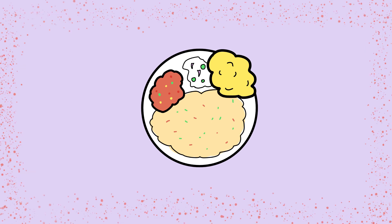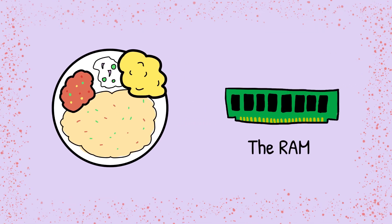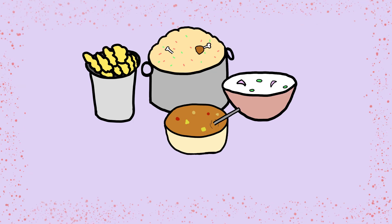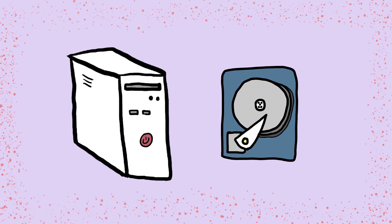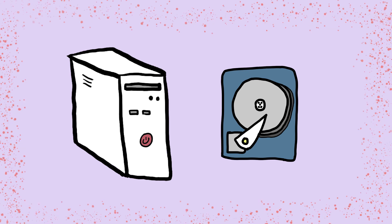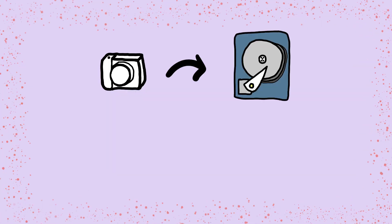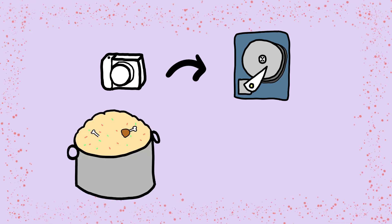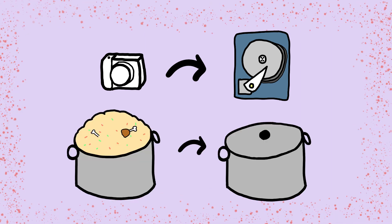The plate that you eat from is analogous to the working memory, aka the primary memory or the RAM. The pots containing food are akin to how data is stored in secondary memory like hard disks and solid state drives. You store all the pictures that you take with your camera in a hard disk, which is similar to how you store all the extra biryani in the pot for eating at dinner later on.